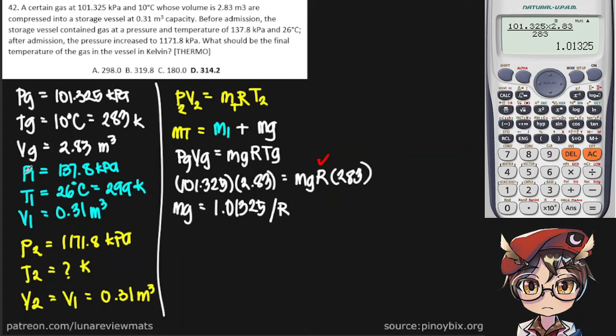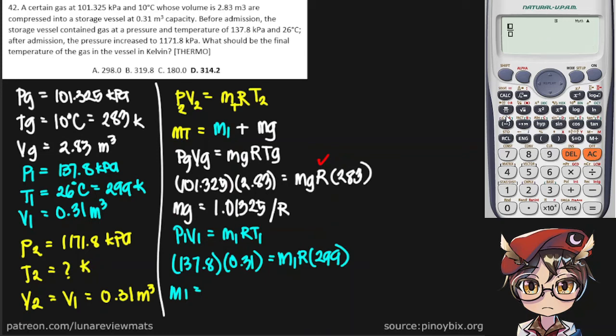Now we do the same to the pre-existing gas. So this one's 137.8 times 0.31, we're looking for the mass, leave R, and of course the absolute temperature. Putting that in, 299. We get 0.14287 per gas constant.